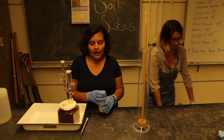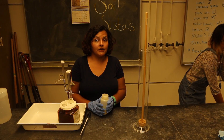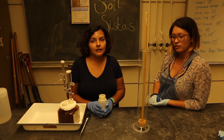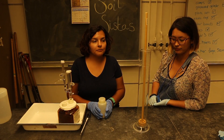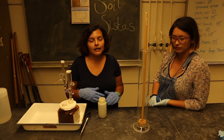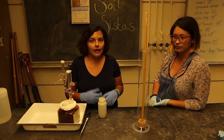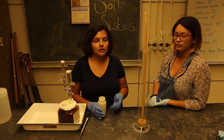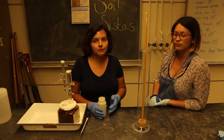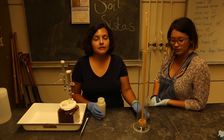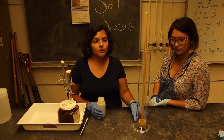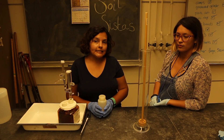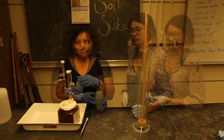We added sodium hexametaphosphate, which acts as a deflocculant — it breaks up soil aggregates so the sand, silt, and clay aren't bound together. This way we get more accurate readings in our sedimentation jar, because if they are aggregated, things will settle out faster than we want. We really want to coat all of the soil particles with SHMP.